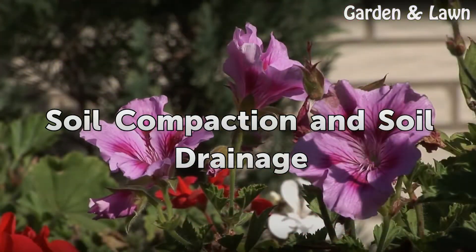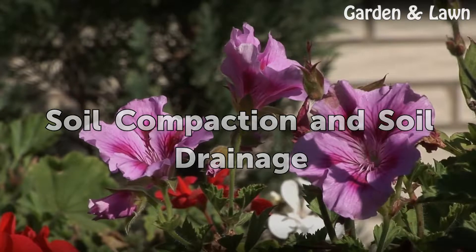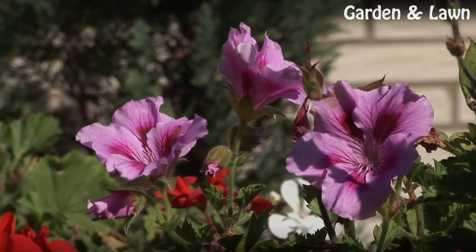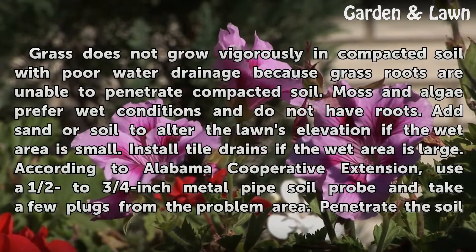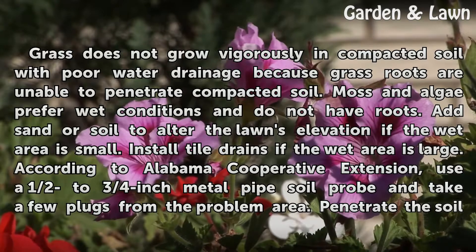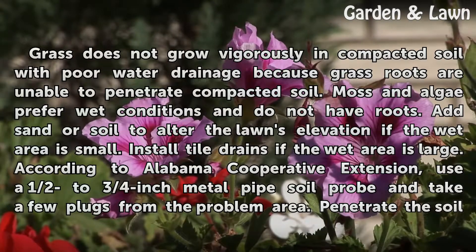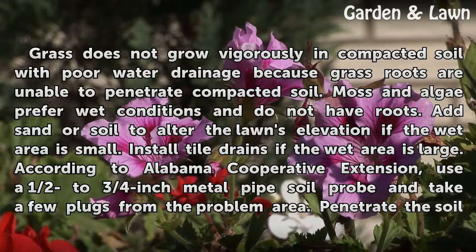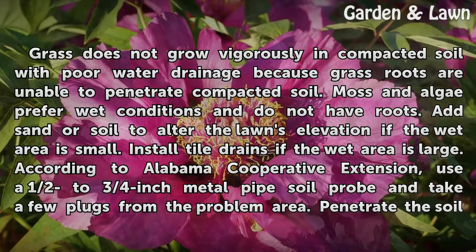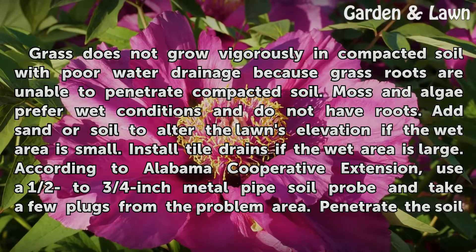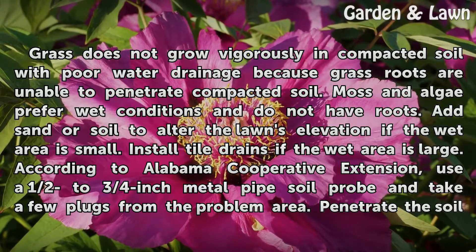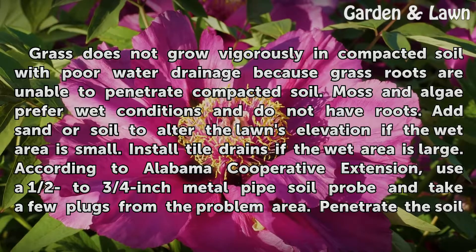Soil Compaction and Soil Drainage. Grass does not grow vigorously in compacted soil with poor water drainage because grass roots are unable to penetrate compacted soil. Moss and algae prefer wet conditions and do not have roots. Add sand or soil to alter the lawn's elevation if the wet area is small. Install tile drains if the wet area is large.